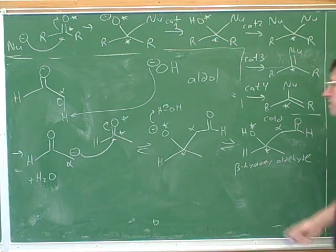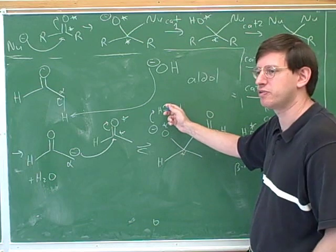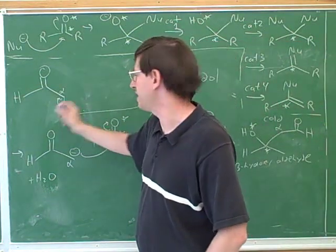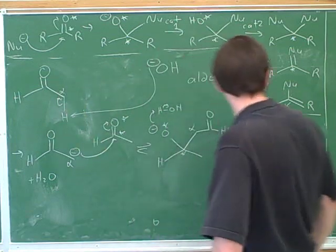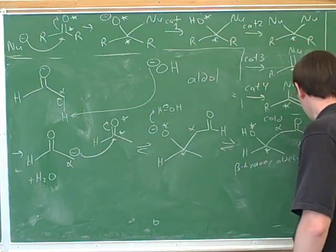Well, how do we turn something into an enolate? Well, we use our base that we just regenerated in this step over here. Remember, in this step we regenerated the base catalyst. So now we can just do this first step all over again, where the base takes the alpha hydrogen over here. So we can use the base that we just regenerated.